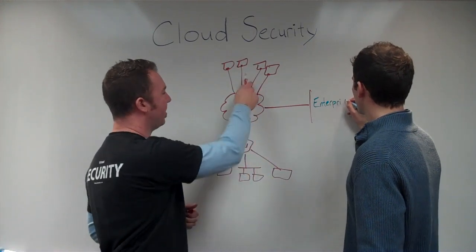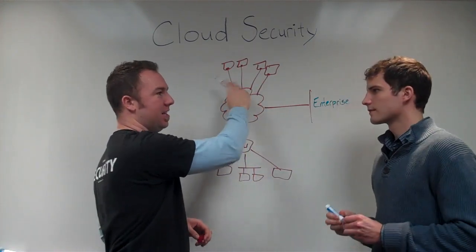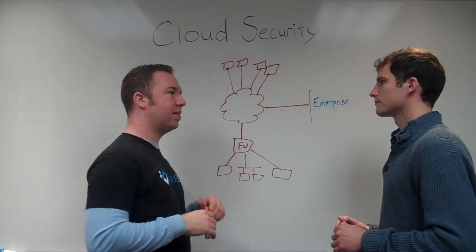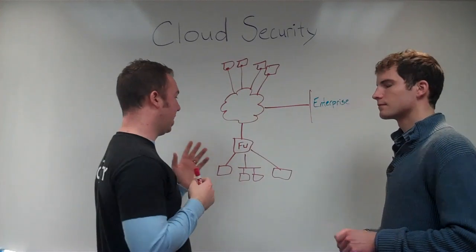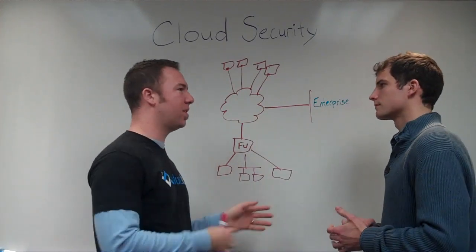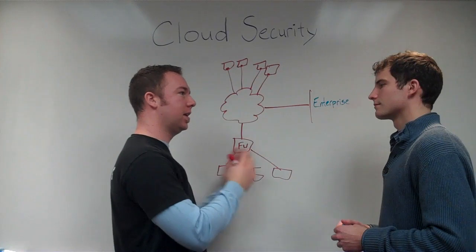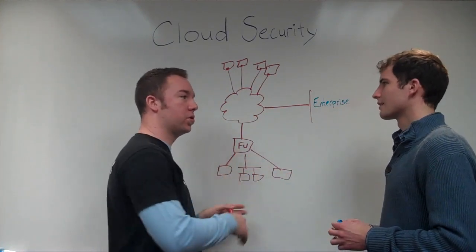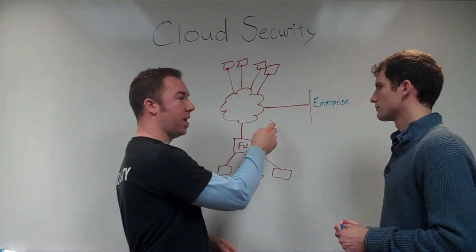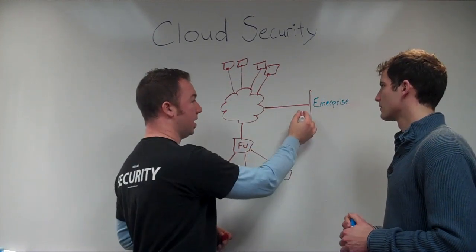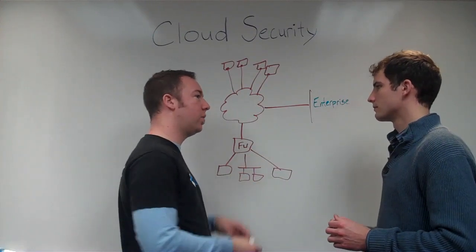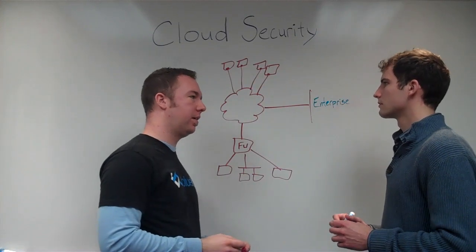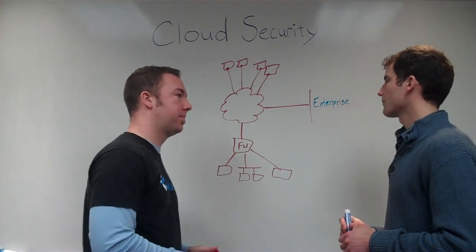So connecting back to the enterprise is one of the biggest challenges, right? So in the public model, you're connecting over these public IPs to each of your standard cloud servers. A lot of compliance type stuff says that you have to have some sort of encryption between the enterprise and the cloud or wherever your servers are. So with the Checkpoint firewall, we can actually do a secure site-to-site VPN. We can do SSL VPN. And there are a lot of modules inside the Checkpoint firewall that'll allow us to do that.